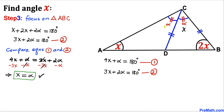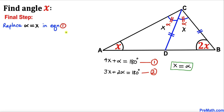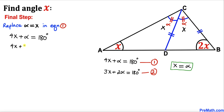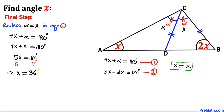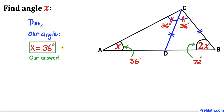Since x = alpha, we replace alpha with x in Equation 1: 4x + x = 180 degrees, giving 5x = 180 degrees. Dividing both sides by 5, angle x turns out to be 36 degrees.